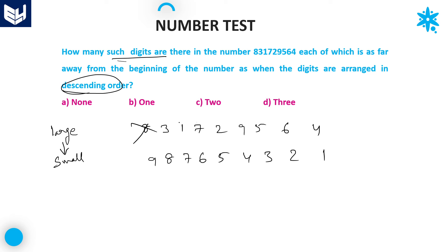Next, 3 and 1 — 0 here, but 1 in descending — no. 3 and 7 — no. 3 and 2 — no. 3 and 9 — 3 digits here, but more than 3 in descending — no. 3 and 5 — no. 3 and 6 — no. 3 and 4 — no. So there is no pair with 3 either.